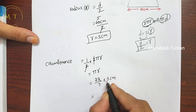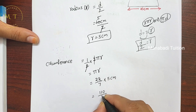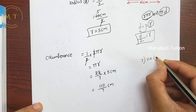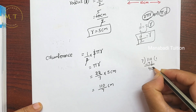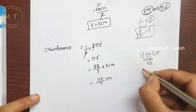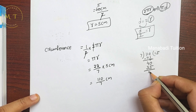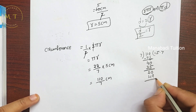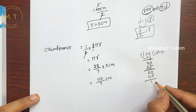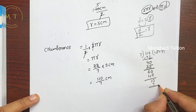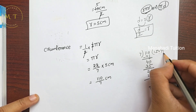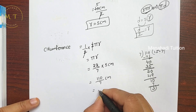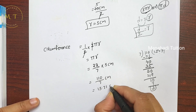We multiply 22 into 5 to get 110, with denominator 7. Dividing 110 by 7 gives approximately 15.71 centimeters. So the semicircle arc length is 15.71 centimeters.